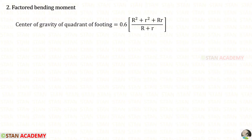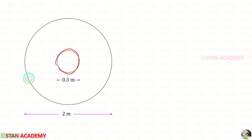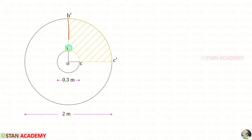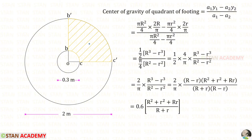Now we find the factored bending moment. We need to find the center of gravity of the quadrant of the footing. Consider this quadrant: we shade only the footing area and leave the column area empty. We need to find the distance of the center of gravity from point O using the formula for A1.